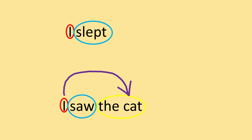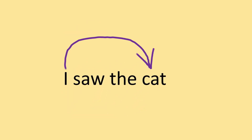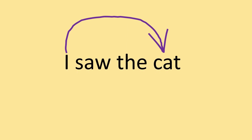So, looking at 'I saw the cat' — three parts. You have the verb in the middle, 'saw,' that's the action. You have the subject, 'I,' doing something to the cat. So the action moves across the verb to the object, to the cat. And so the magic word here is 'across.'